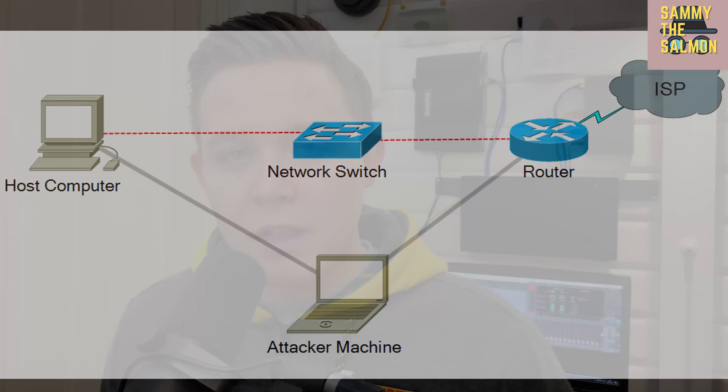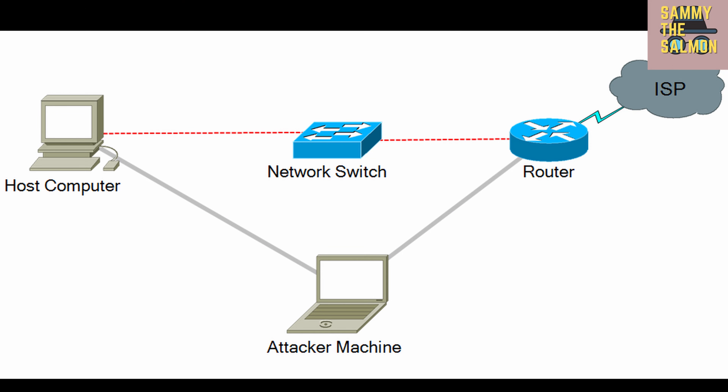Another reason for attacking a WiFi network is to steal confidential information by becoming a man-in-the-middle. This usually happens on open WiFi networks in a coffee shop or library, but it can also happen on private networks. A man-in-the-middle is where an attacker's machine intercepts network traffic between two hosts — such as a laptop communicating with a router — by redirecting that traffic through the attacker's machine.